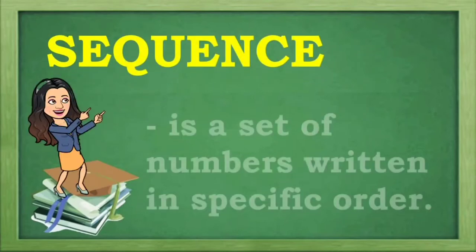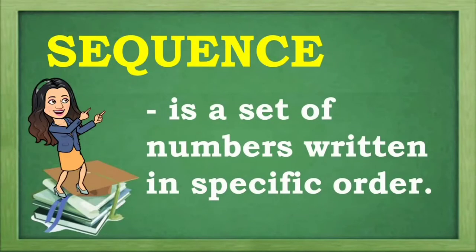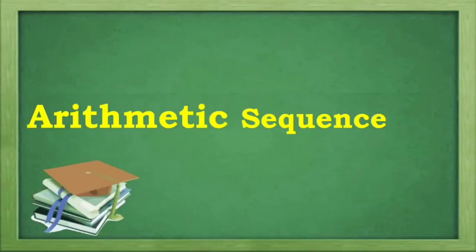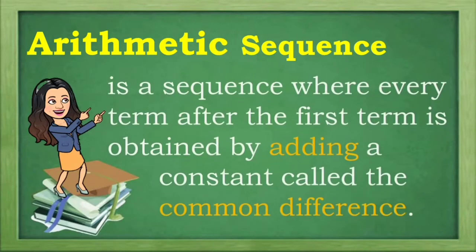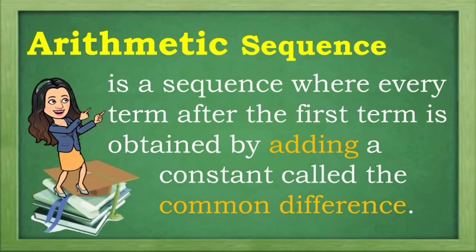Sequence is being defined as a set of numbers written in specific order. One type of that is the arithmetic sequence — a sequence where every term after the first term is obtained by adding a constant called the common difference.